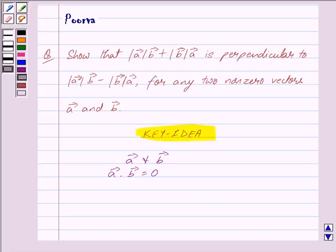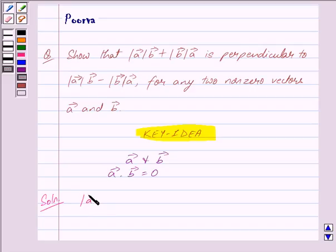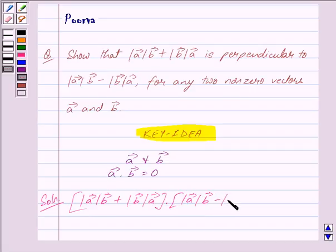Let us now begin with the solution. We have to show that these two vectors are perpendicular to each other, that is, we have to show that the dot product of these two vectors is equal to zero. So we consider (|A × B| + |B × A|) dot (|A × B| − |B × A|).